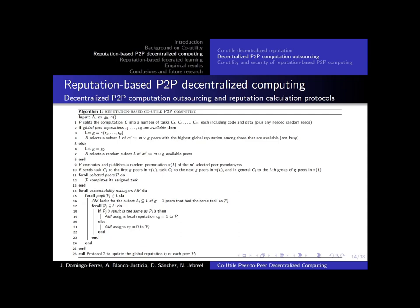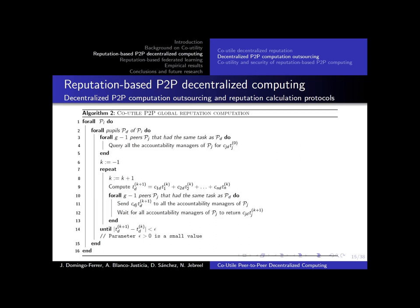Then, after checking the results, if the peers they are in charge of have given a result equal to the majority result, they increase their reputation. Otherwise, they assign a zero reputation to that peer. After this is completed, we call Protocol 2. This Protocol 2 computes the global reputations from the local opinions of the accountability managers.